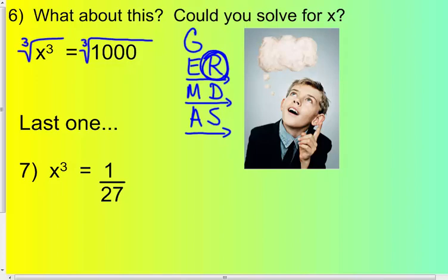Taking the cube root of something that's cubed leaves just x. For the cube root of 1,000 — what number times itself 3 times equals 1,000? Well, 10 times 10 is 100, times 10 more is 1,000. So the answer is 10.